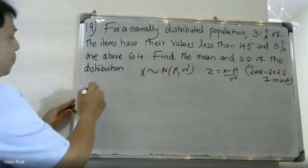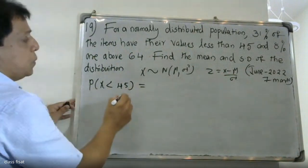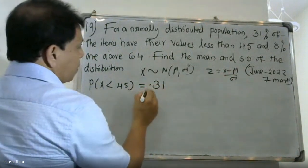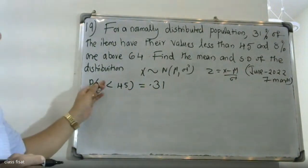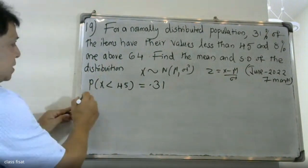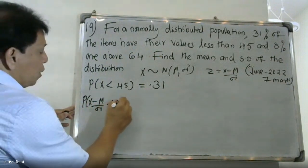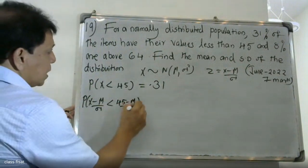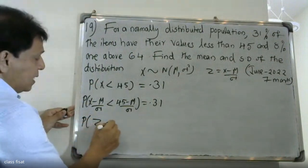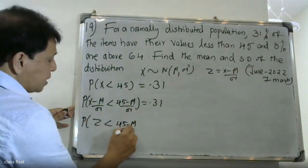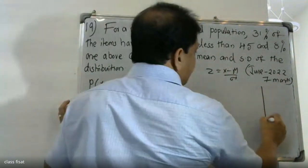For a normally distributed population, 31 percent of items have values less than 45, so the probability of X less than 45 is equal to 0.31. We convert this using the standard normal: the probability that (X - μ)/σ less than (45 - μ)/σ is equal to 0.31. Let z = (X - μ)/σ, so P(z < (45 - μ)/σ) = 0.31.